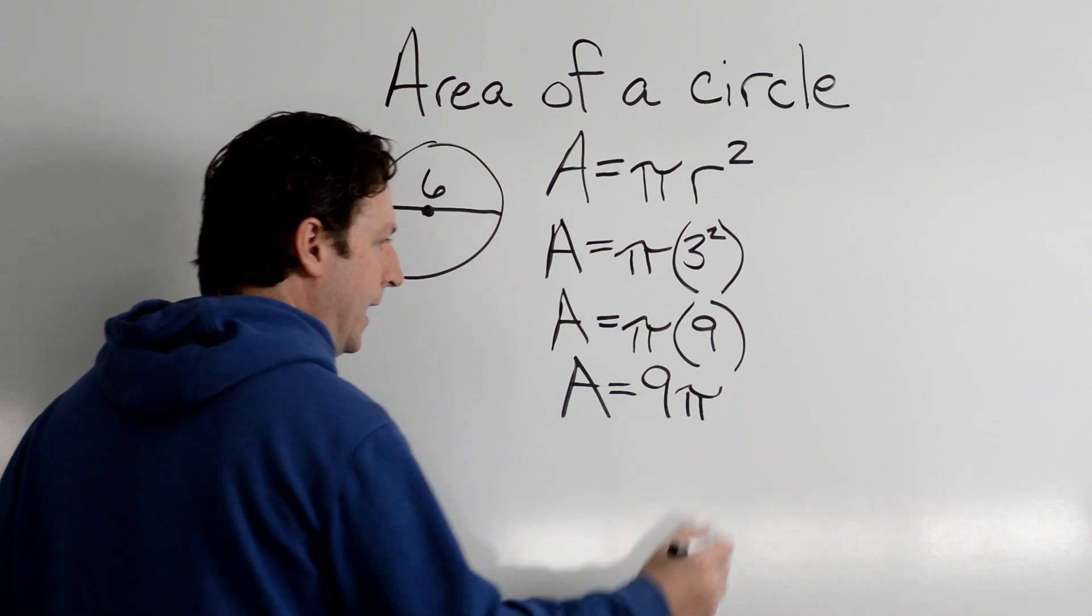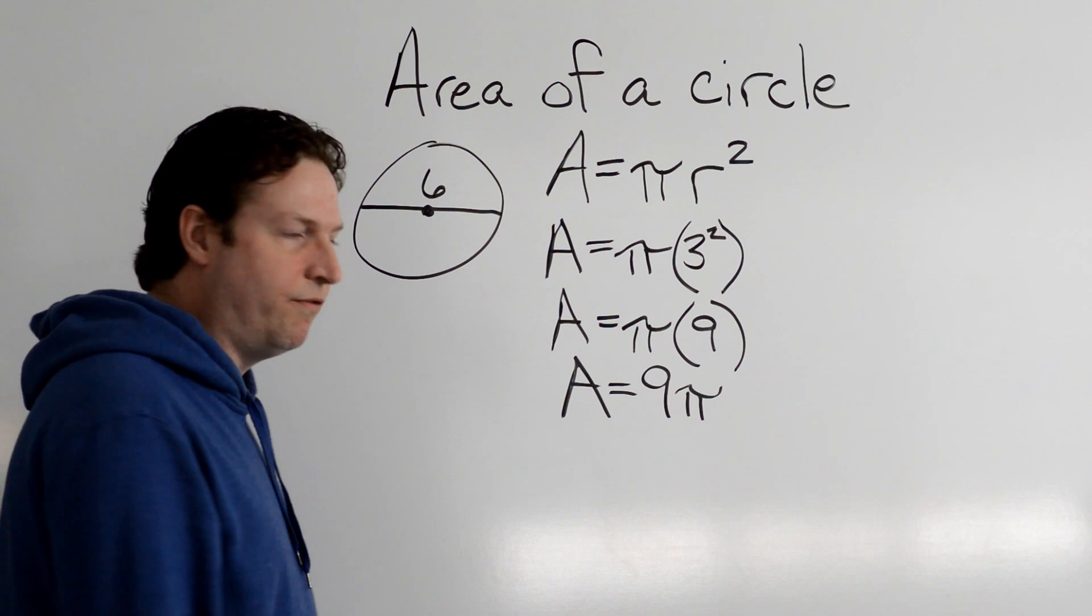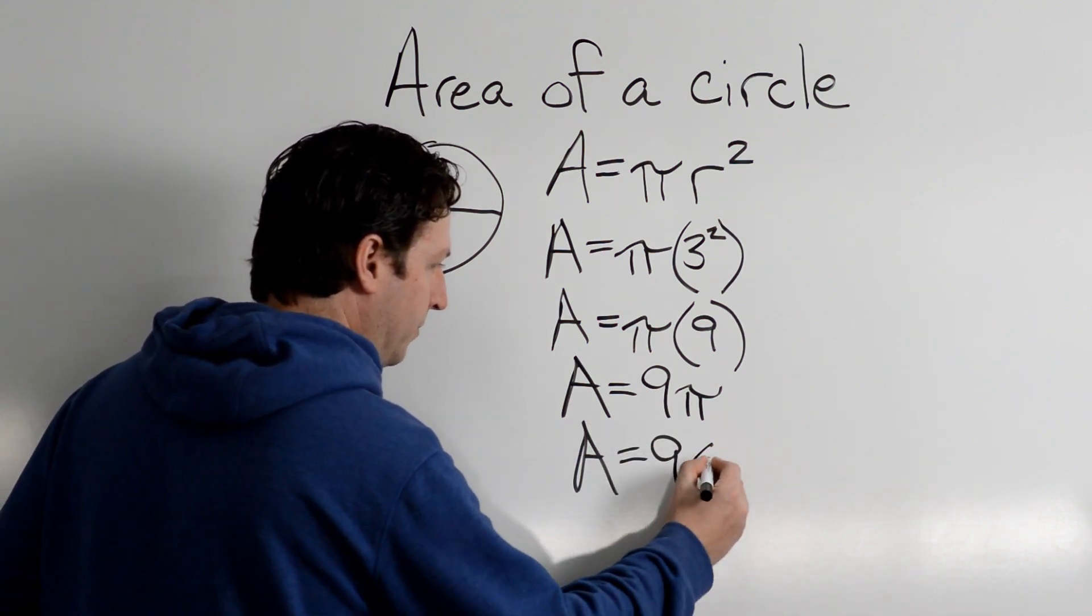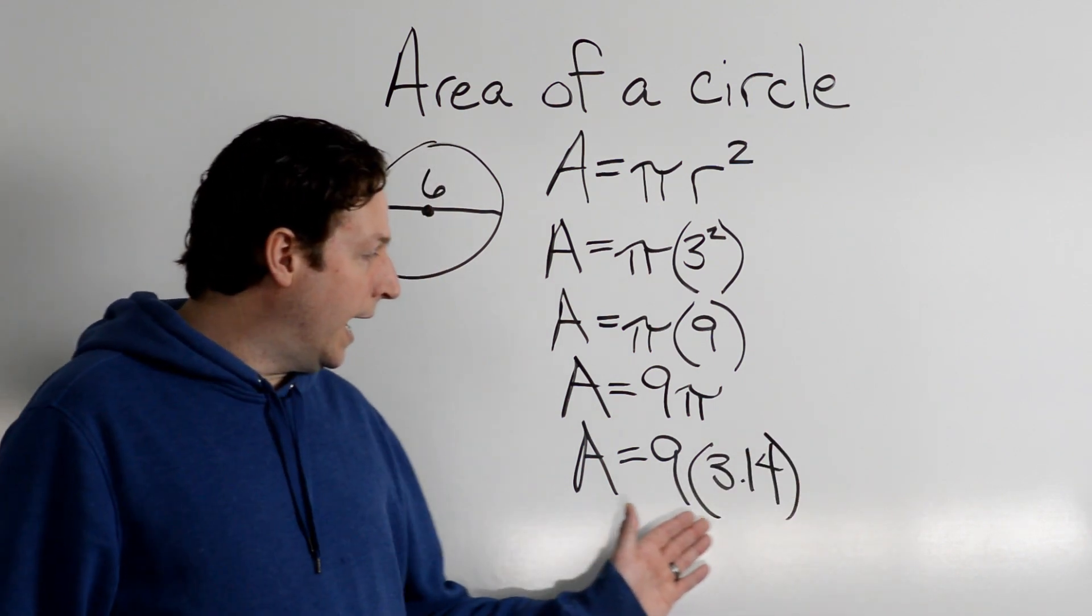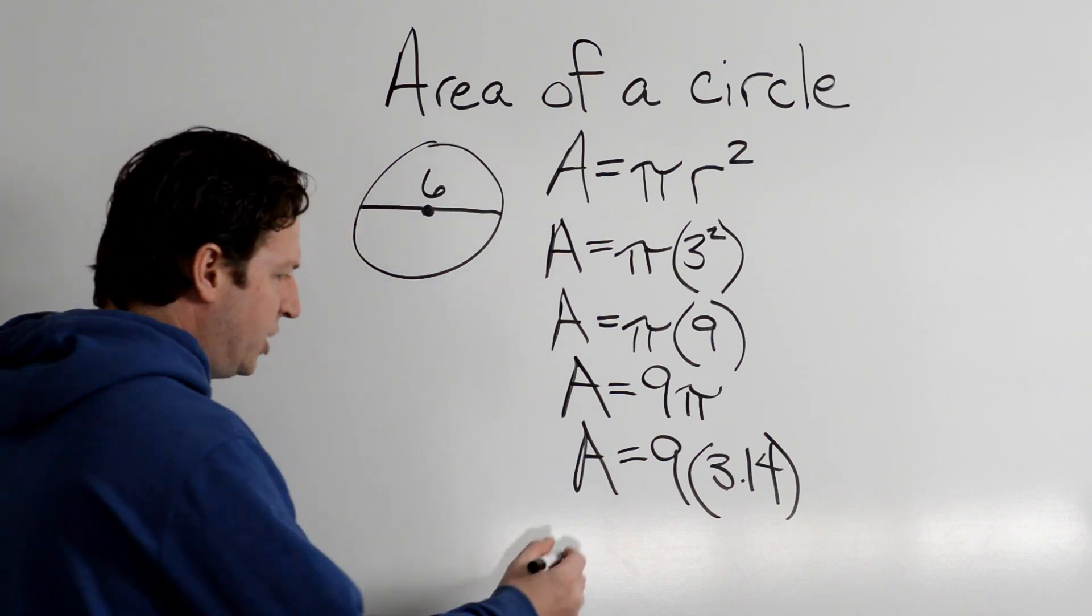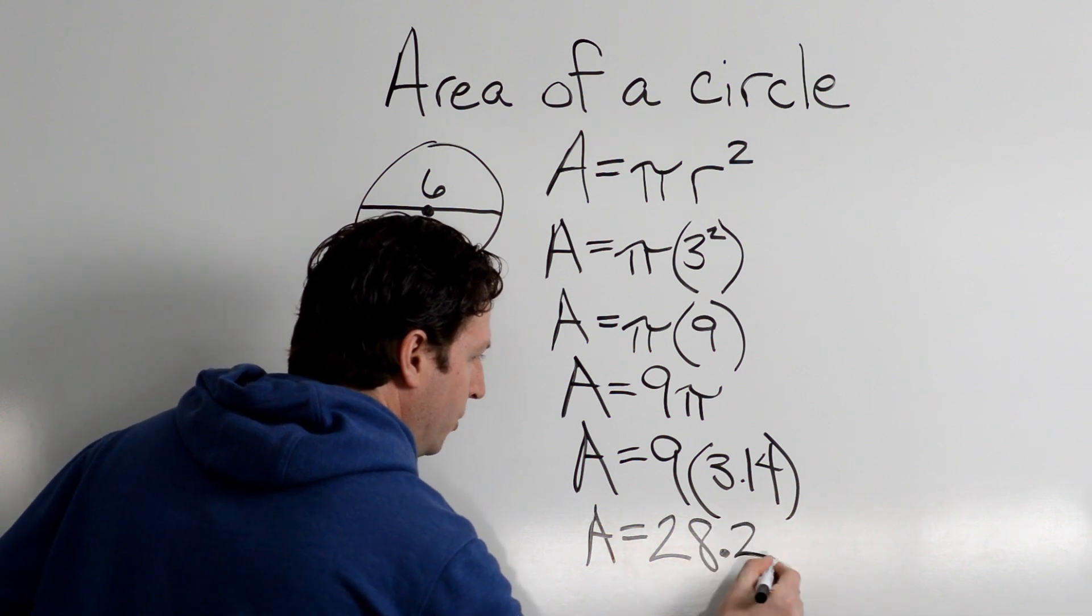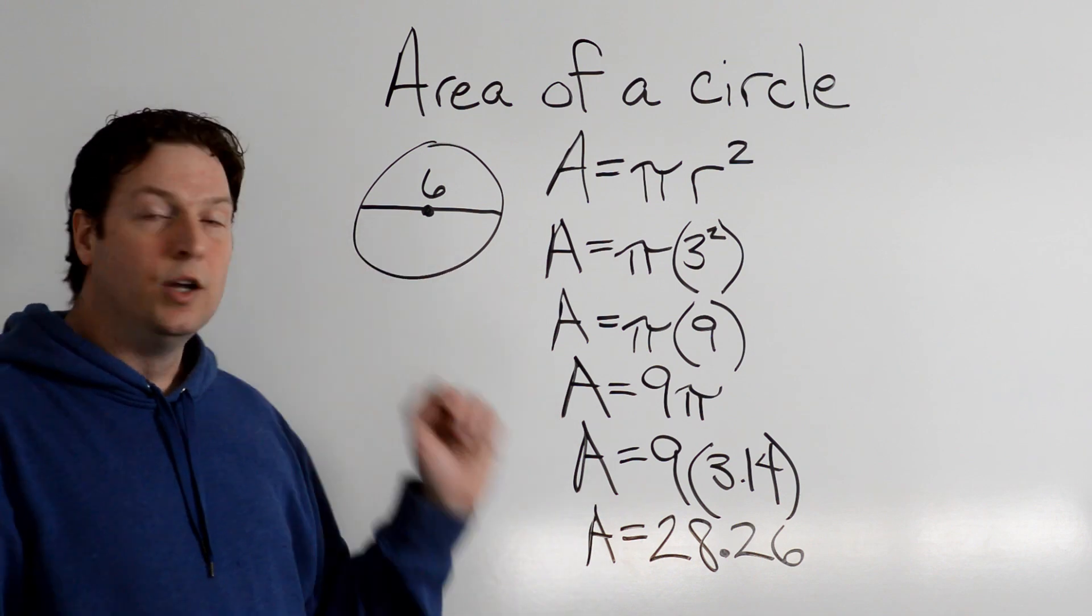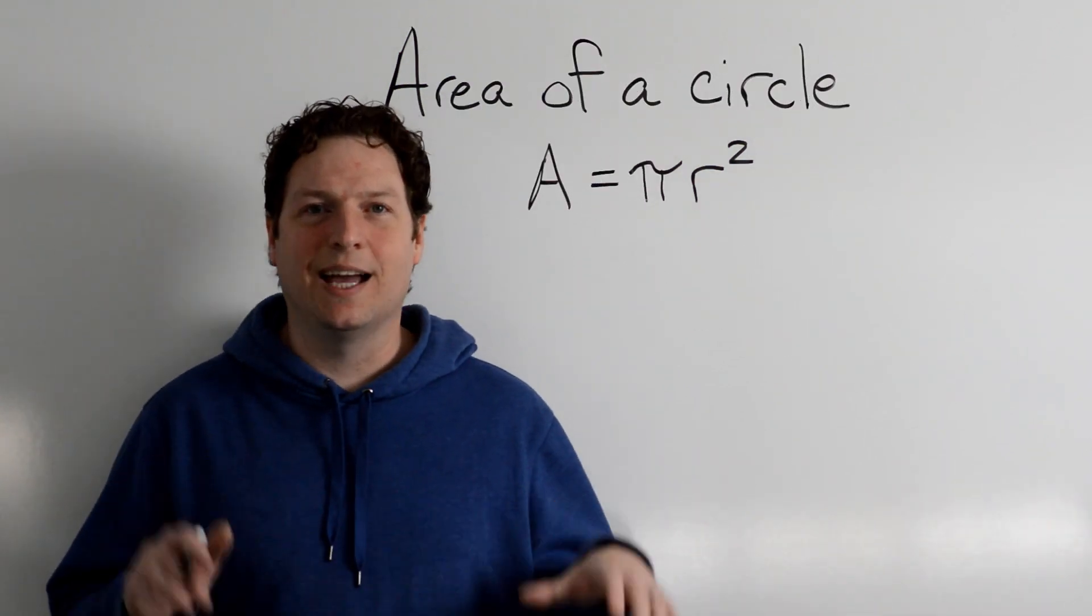Perfect. Now let's use the 3.14. A equals 9 times 3.14, and we're going to get, I think it's 28.26. 28.26 for the area with a diameter of 6 or a radius of 3. Let's tackle one more, this time with decimals.